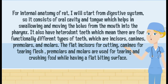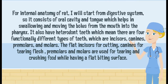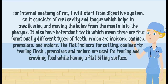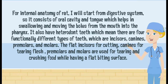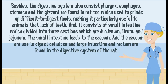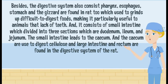For the internal anatomy, starting with the digestive system: it consists of the oral cavity and tongue, which helps in swallowing and moving the bolus from the mouth into the pharynx. The rat also has heterodont teeth, meaning there are four functionally different types of teeth — incisors, canines, premolars, and molars. The flat incisors are for cutting, canines for tearing flesh, while premolars and molars are used for tearing and crushing food with a flat grinding surface.